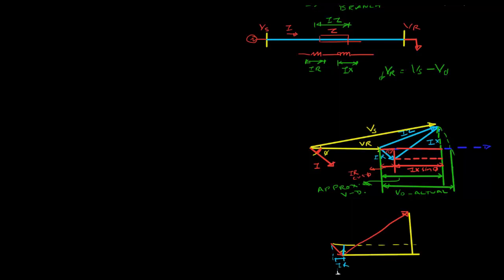By trigonometry, the horizontal projection of I·R is I·R·cos(phi), and the horizontal projection of I·X is I·X·sin(phi). This angle is your power factor angle phi. Looking at the right-angle triangle with hypotenuse I·R, the adjacent side is I·R·cos(phi), and with hypotenuse I·X, the opposite side relevant to phi is I·X·sin(phi).